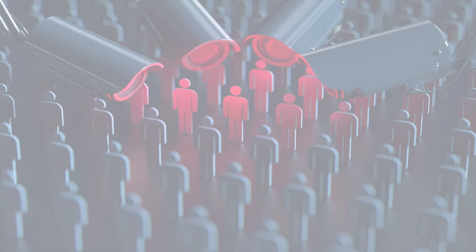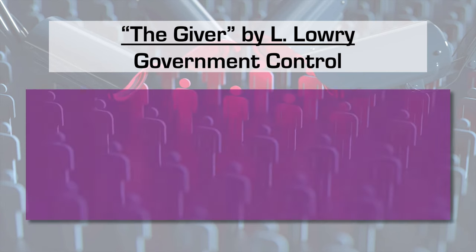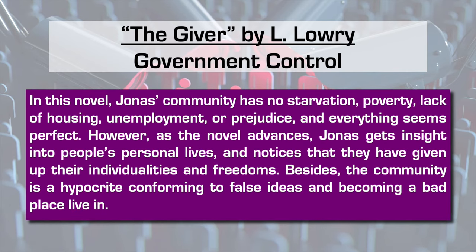An example of dystopian literature is The Giver by Lois Lowry. In this case, we have government control. In this novel, Jonas' community has no starvation, poverty, lack of housing, unemployment, or prejudice — and everything seems perfect.